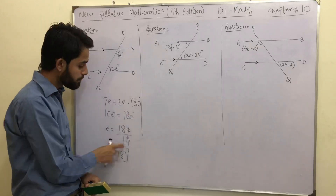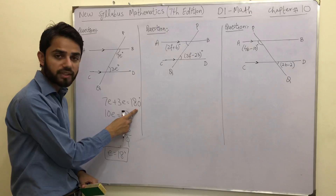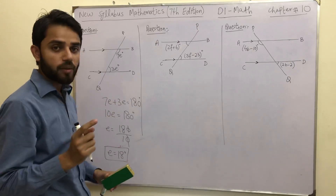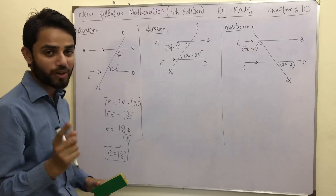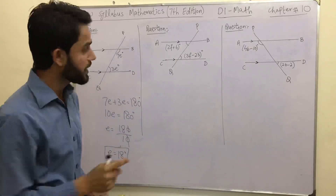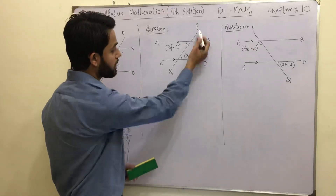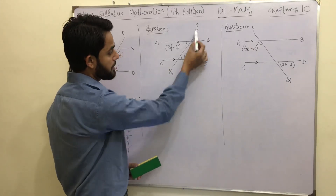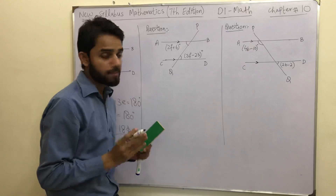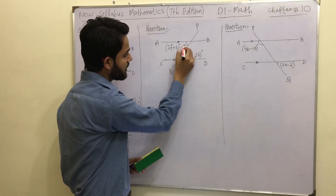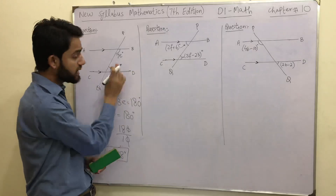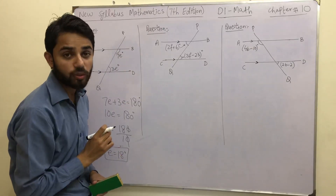That is a cross-check step I am leaving for all of you to do yourselves. If by plugging in the value of E you are not getting 180 degrees, it means you did something wrong. Let me know in the comments whether you are getting the right answer. Now, this is another question with two parallel lines AB and CD, and transversal PQ cutting them. We have two angles: one is 2F + 6 and the other is 3F − 23.